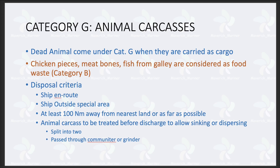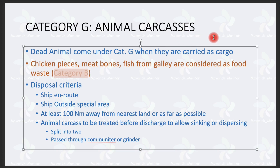But remember: the provisions we carry for human consumption — chicken, fish, meat — which are stored in our refrigeration rooms, that will not be considered as animal carcass. That will come under food waste Category B. You have to differentiate: dead animal comes under Category G only when carried as cargo, but what we use for eating and the provisions stored in our refrigeration rooms comes under food waste Category B.